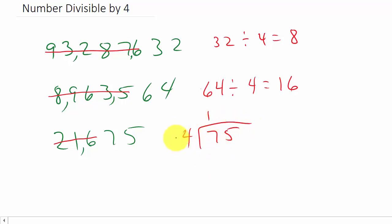4 goes into 7 one time. That's 4. That's 3. 5. And 4 does not go into 35 evenly. Okay. It would be, what, 8. That would be 32. And you can see that we're left with a remainder of 3.